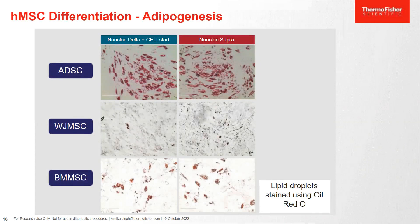The final experiment we did was to check the differentiation potential of cells taken from the Supra surface compared to cells grown on Delta coated with ECM. For adipogenesis, when the lipid droplets were stained using Oil Red O, in all three cases — ADSCs, WJ MSCs, and BMMSCs — the results were similar. Ideally, if you are growing your cells on Supra surface without any ECM coating, the adipogenesis differentiation is not hampered and you get a good amount of differentiation as you would when growing cells on an ECM-coated surface.